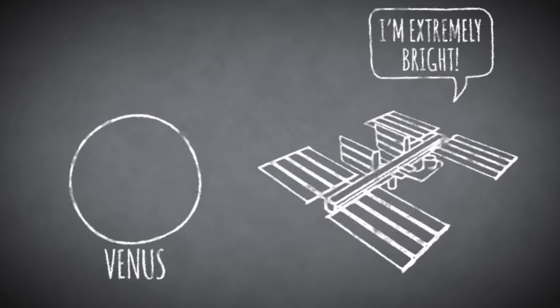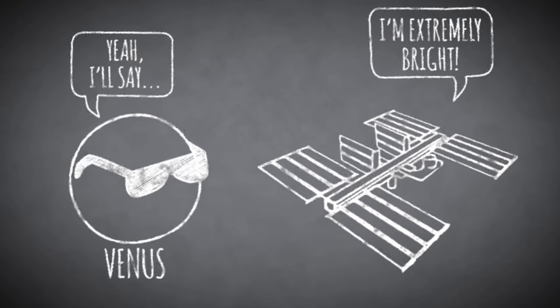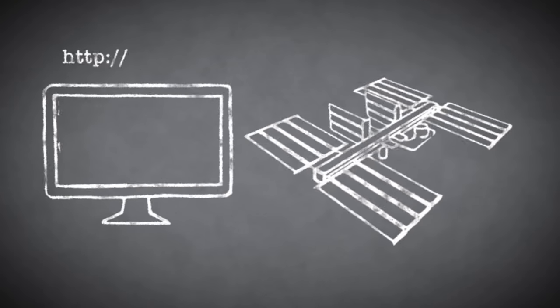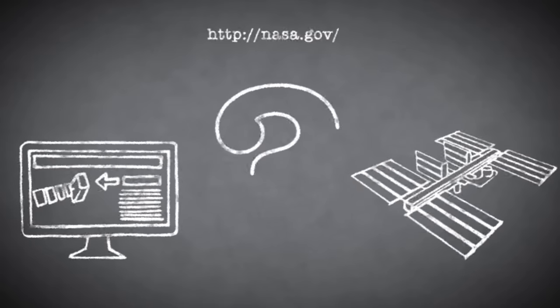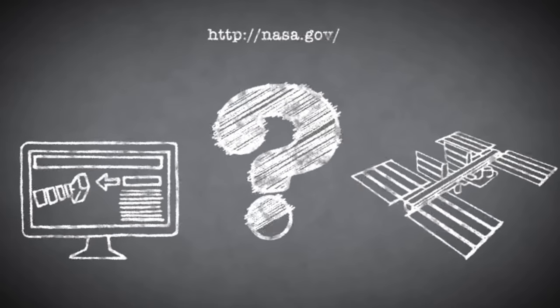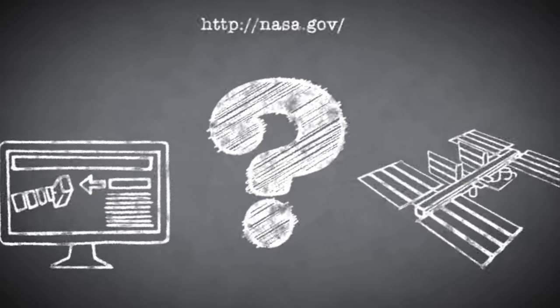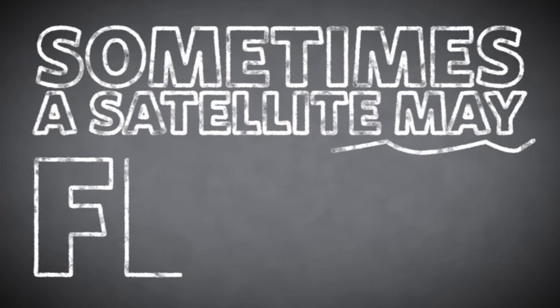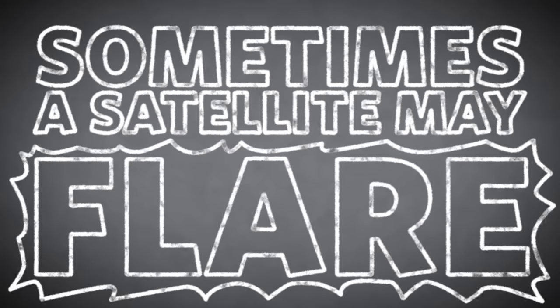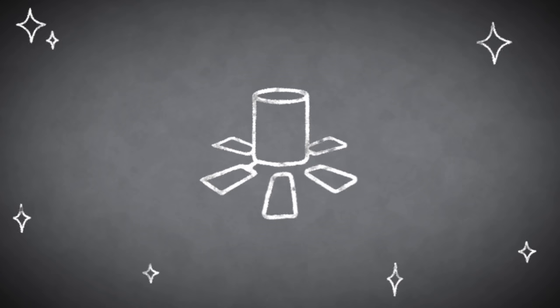About the size of a football field, it provides plenty of surface area to reflect the sun's light, and that makes it an extremely bright object in the sky, rivaling even the planet Venus. You can consult several websites including NASA's to find out when the space station can be spotted passing over your location.